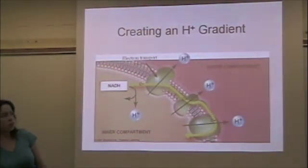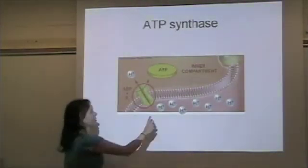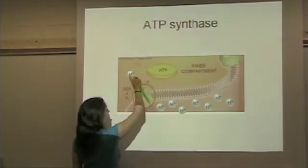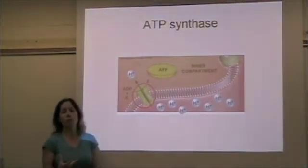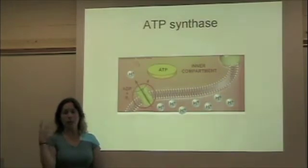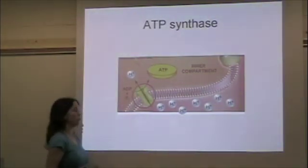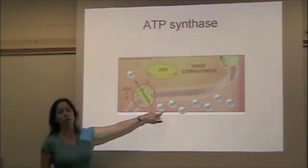Once that hydrogen ion gradient is established—lots of hydrogens outside, very little inside—the hydrogens want to diffuse back into the cell. They want to go from high to low concentration. The problem is that hydrogens are charged.